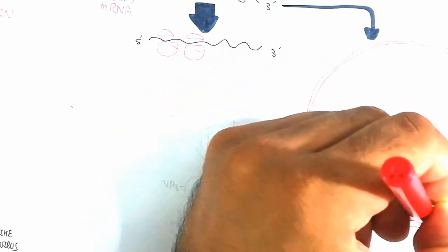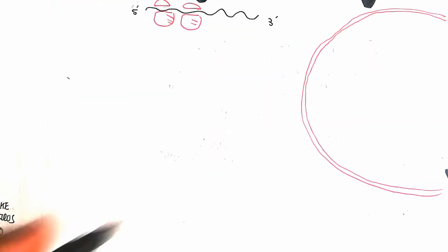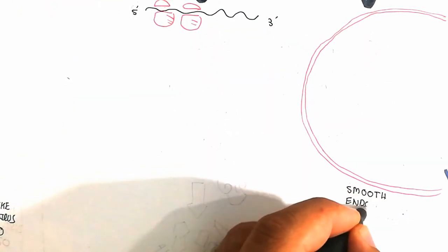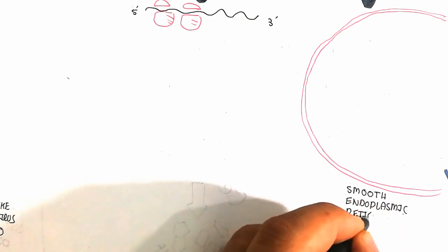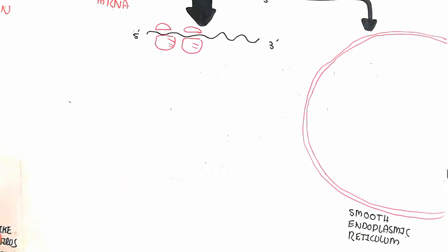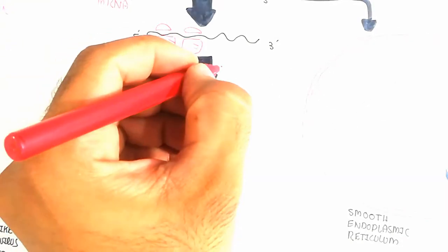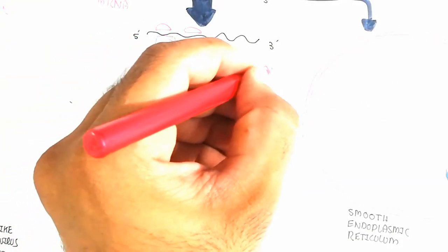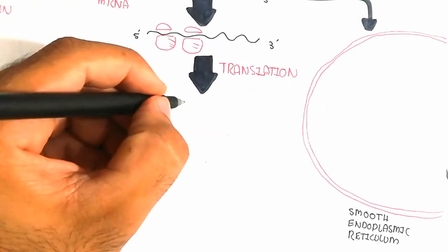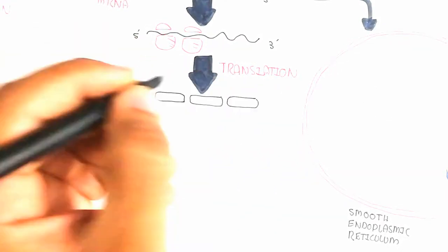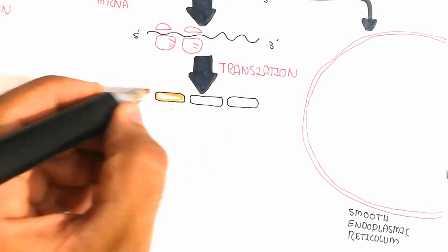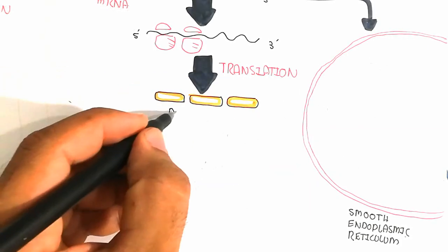This is the smooth endoplasmic reticulum which is used for the replication of more segments of RNA for viral replication. In this way, here is the 5 prime to 3 prime direction. Translation will occur to produce several types of proteins, P1, P2, and P3.